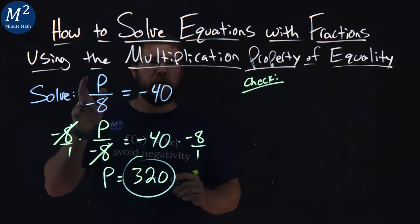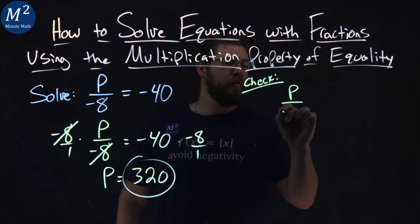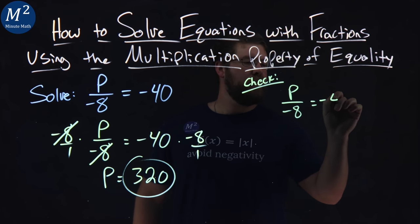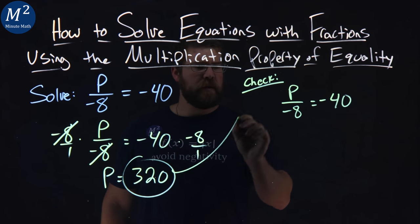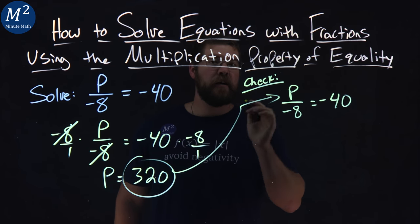How to check it? Rewrite our equation: P over negative 8 equals negative 40. From there, I'm going to substitute 320 in for P.